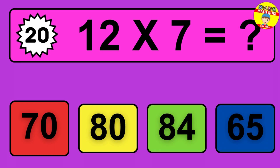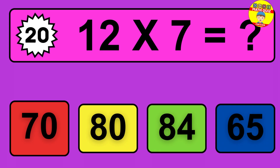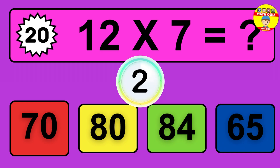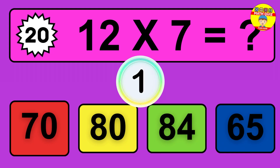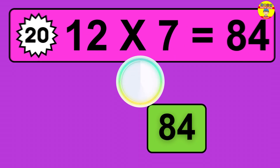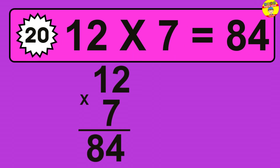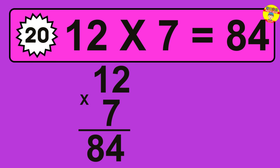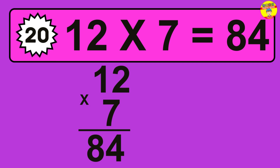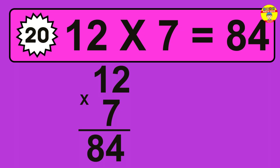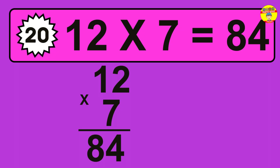Question 20. 12 times 7 equals what? The answer is 12 times 7 is 84. To calculate, we have 12 groups with 7 balls each one. So, how many balls do we have? 84 balls.